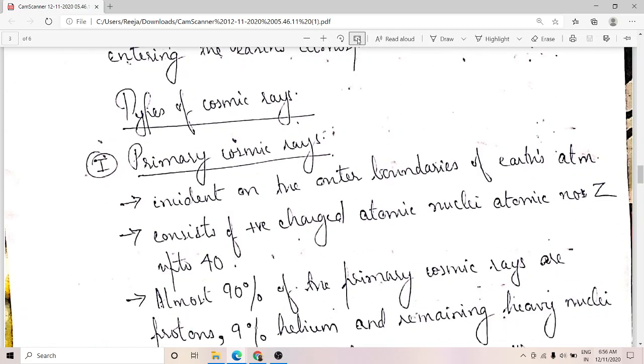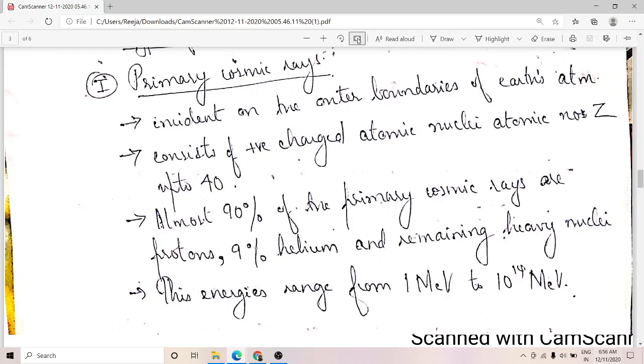Primary cosmic rays are those cosmic rays which are directly incident on the outer boundaries of the earth's atmosphere. They consist of charged nuclei with atomic number up to 40. About 90% of the primary cosmic rays are protons, 9% helium, and the remaining heavy nuclei. Their energies range from 1 MeV to about 10^14 MeV. The second kind is secondary cosmic rays, which are produced when the primary cosmic rays collide with the air molecules present in the earth's atmosphere.